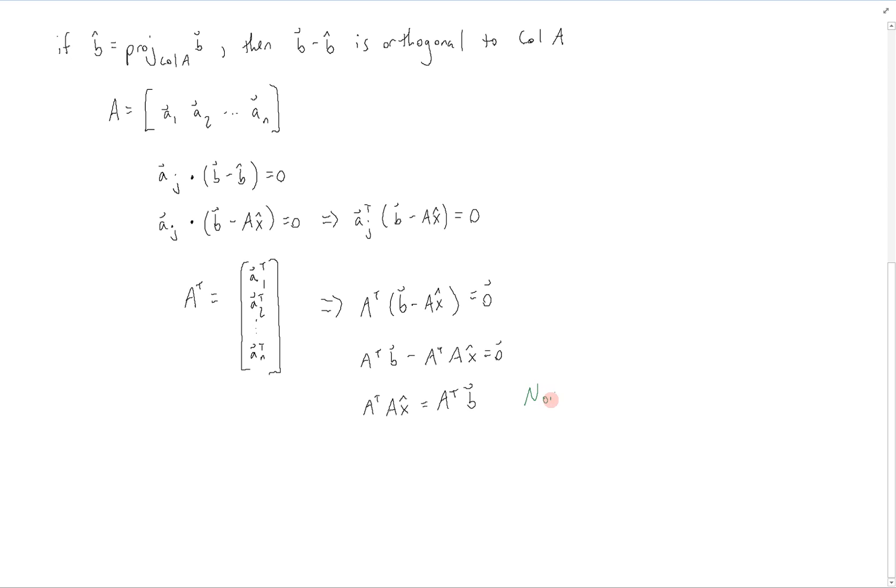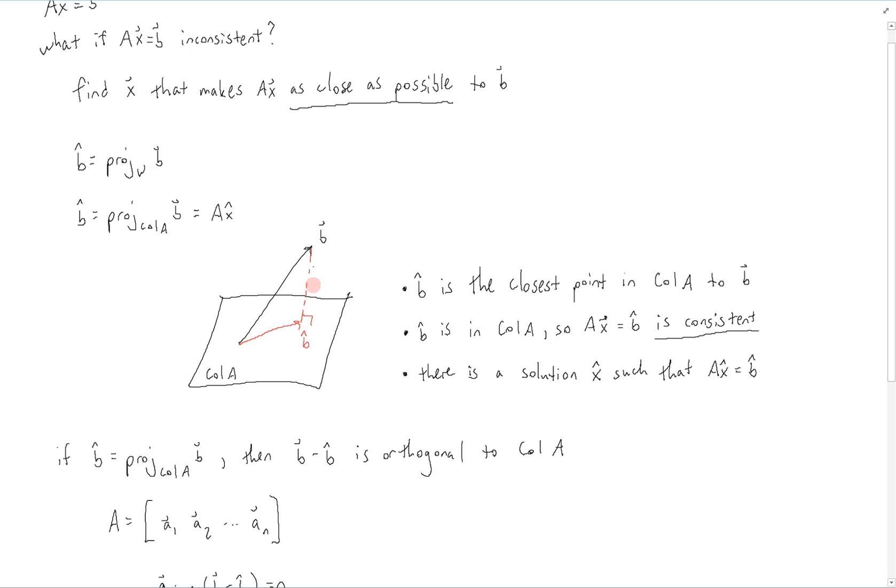And this is known as the normal equations. This is the system of equations which you would solve to get x hat, the least square solution. And this is again just a matrix. A transpose A is a matrix. A transpose b is a vector. So therefore, you're just solving the usual system of equations, something times the vector x is equal to a vector. So it's just matrix times vector is equal to vector, the usual system of equations that we're used to. And solving for x hat gives the best approximation for ax equals b. Since we saw that this is the closest point within the column space of a to the vector b, since it's just the orthogonal projection into the column space of a.